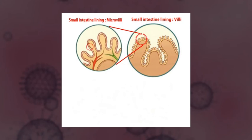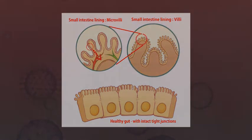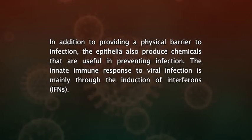The first barrier to any infection in the host system is the epithelial surface of the skin and the lining of the gut. They provide a difficult barrier that could not easily be penetrated by the pathogens. In addition to providing a physical barrier to infection, the epithelia also produce chemicals that are useful in preventing infection.